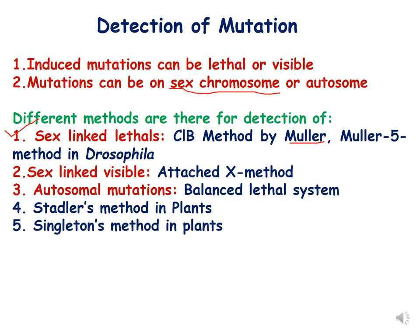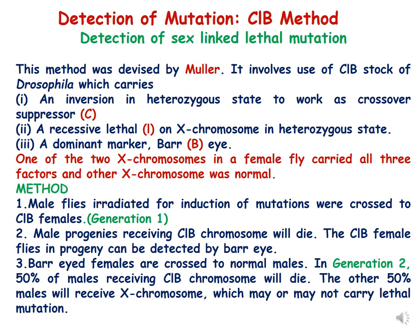Detection of sex-linked lethal mutations is called the CLB method of detection, which was devised by Mueller. It involves the use of the CLB stock of Drosophila. The CLB stock carries a chromosome which has an inversion in heterozygous state to work as a crossover suppressor, which is designated by C.